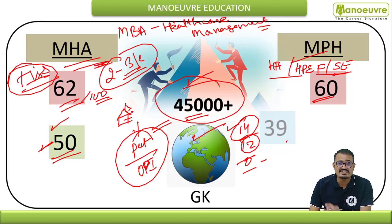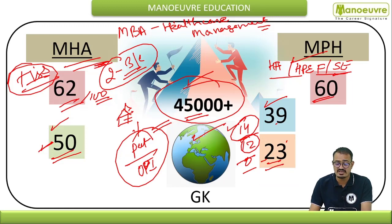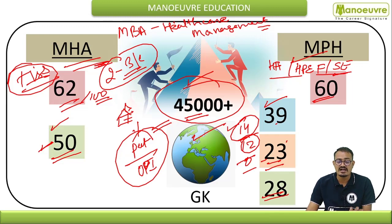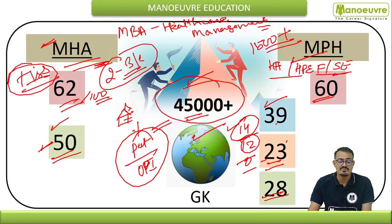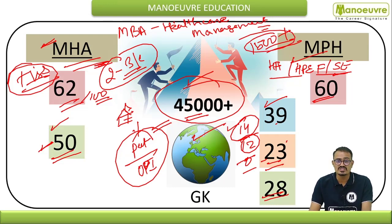For the MPH program, the total seat intake is: 39 seats for Health Administration, 23 seats for Health Policy Economics and Finance, and 28 seats for Social Epidemiology. Around 1,500 plus candidates appear for MPH, while 2,000 to 3,000 appear for MHA. So look at the competition versus seat intake: 50, 39, 23, and 28 seats only.